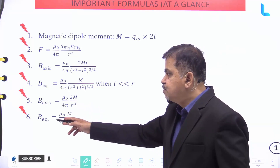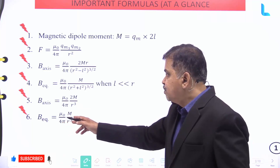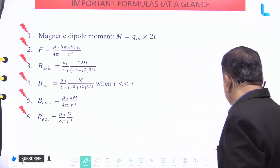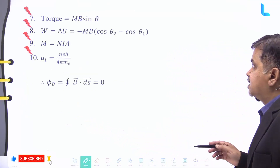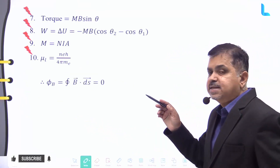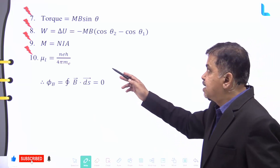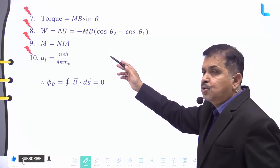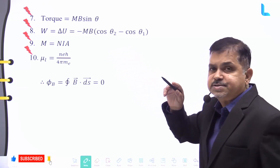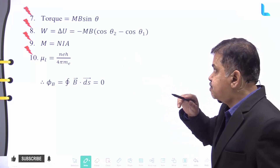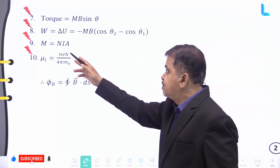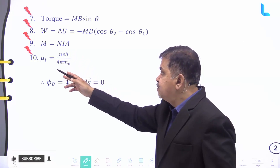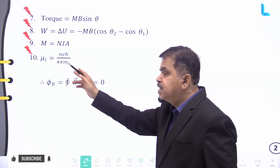B equatorial is given by mu naught divided by 4 pi into m divided by r cube. The torque is given by MB sin theta. The work done W equals delta U, which is also equal to minus MB into cos theta 2 minus cos theta 1. M is given by n into I into A.